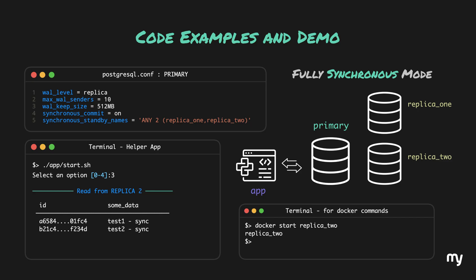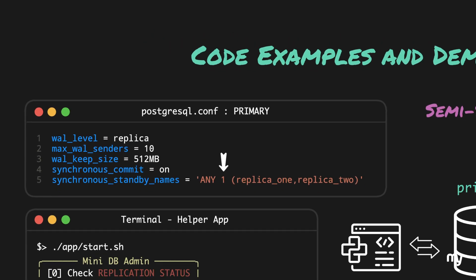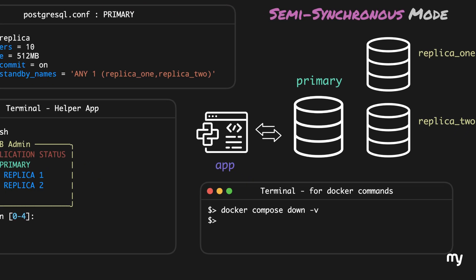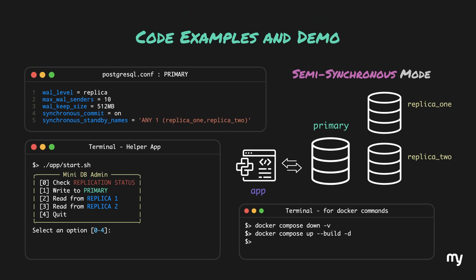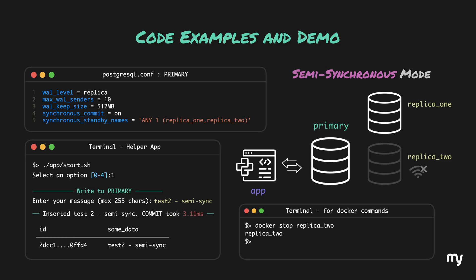Now let's try to bring the system to semi-synchronous mode. We make a minor change in our Postgres configuration file, drop all the previous configuration, and start the servers once again. At this point all replicas are healthy. Let's stop replica2 and try to write something to the database. We can type in test2-semi-sync and press enter. This time the prompt did not block, because the primary marked the transaction as successful — one of the replicas was still running, and its acknowledgement was enough to mark the transaction as completed.